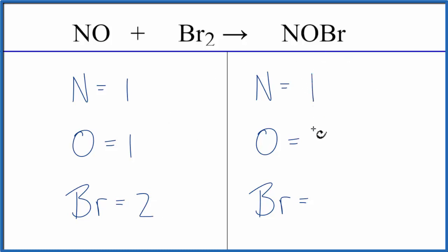On the product side, we have 1 Nitrogen, 1 Oxygen, and 1 Bromine. So the Bromines, that's the only thing that's off, and to fix that, we'd have to put a coefficient of 2 in front of the NOBr.